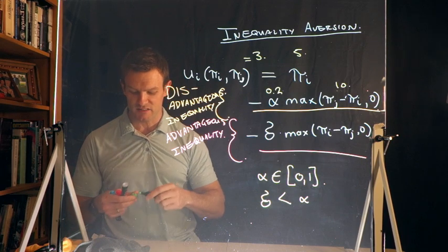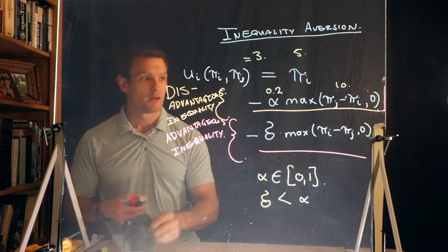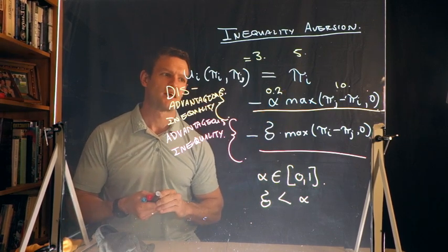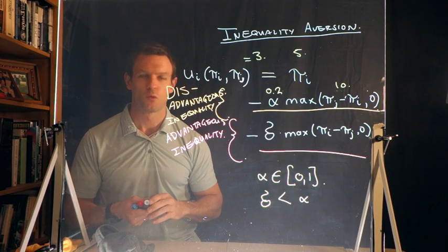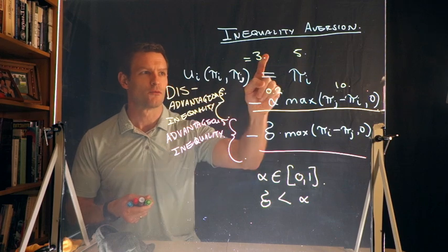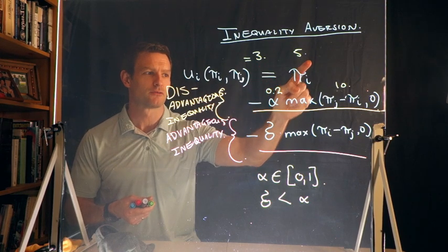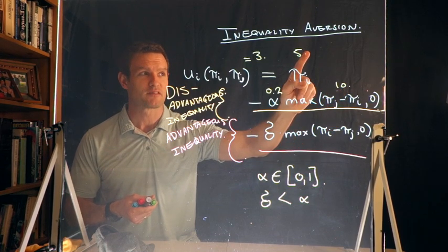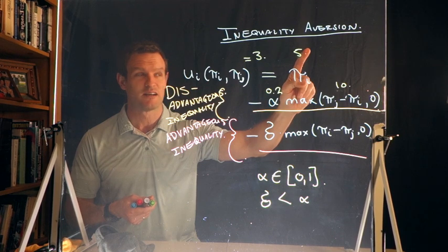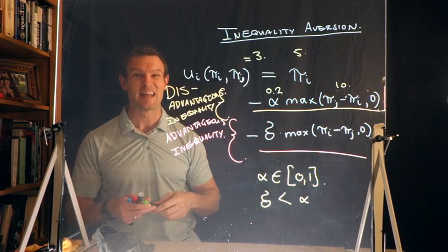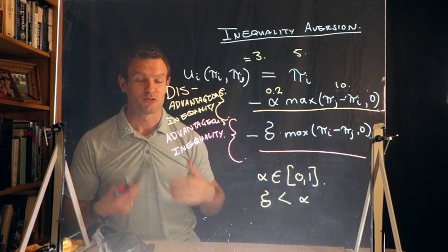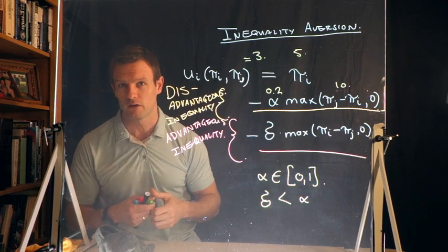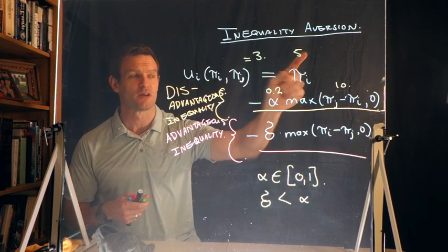Now let's imagine that instead α were higher. Imagine α were, say, 0.8. What would we have seen then? We'd have seen 5, my payoff, minus 0.8 times 10. That's 8. So even though I'm receiving a positive amount of money, 5 minus 8 is giving me a net utility of minus 3. And so my utility of being so much worse off than you are is in fact negative, even though I'd received a positive amount of money.